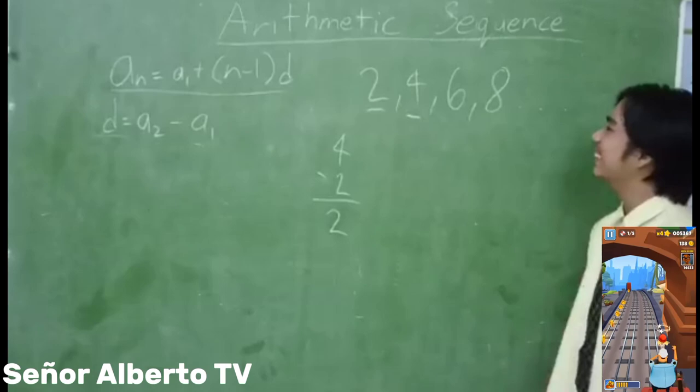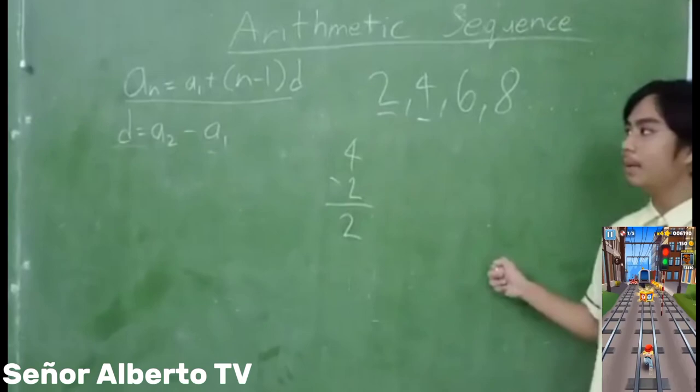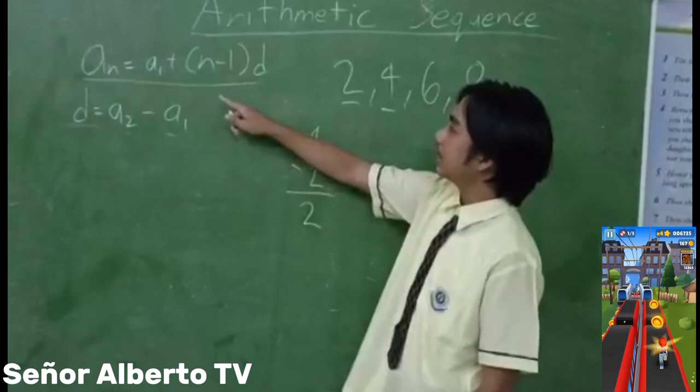Since we found the difference, what do you think is the next term? We need to use a formula. So here is our formula: A sub n is equal to A sub 1 plus n minus 1 times d.